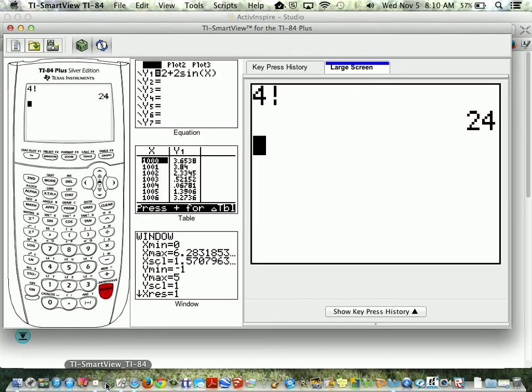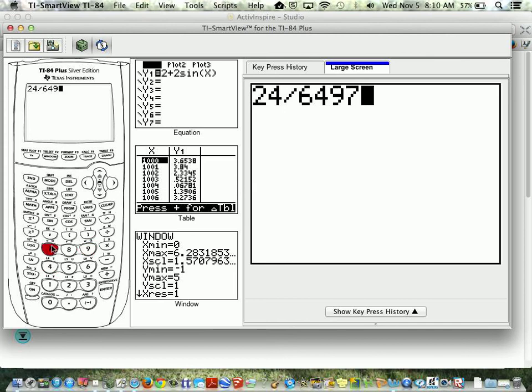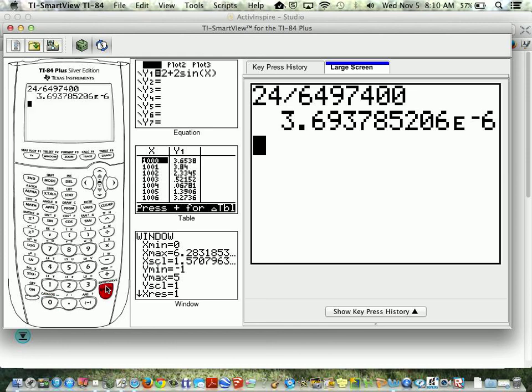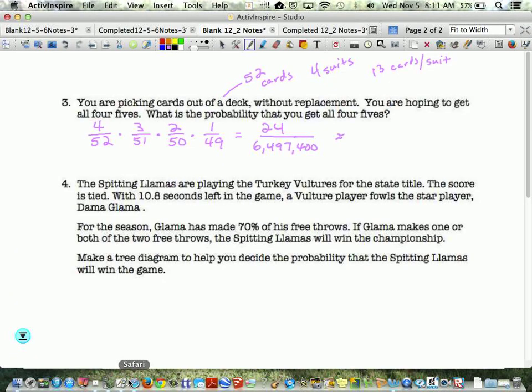We better take a look because that's giving scientific notation. 24 divided by 6,497,400. Remember, this e to the negative six is asking you to bring the decimal six places to the left. So I'm gonna bring it once to the left, there'll be on the other side of the three, and we have to add five zeros.